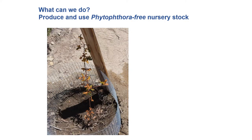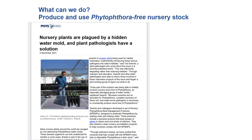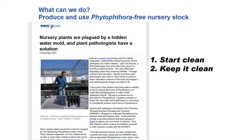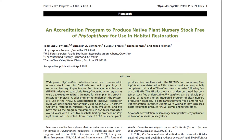What can we do to prevent this outcome? The solution is to produce and use Phytophthora-free nursery stock. This is something you can't see in many cases until it's too late. The solution is fairly simple: you start with clean materials, all the inputs being clean, and you keep it clean during the production process. We helped develop a series of BMPs and a program based on those BMPs for accrediting nurseries for clean plant production.